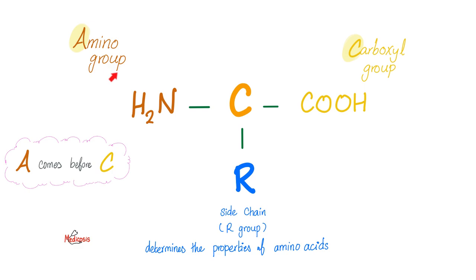Amino group here, carboxyl group here. This is the side chain or the R group, and this is the one that determines the chemical properties of the amino acids.